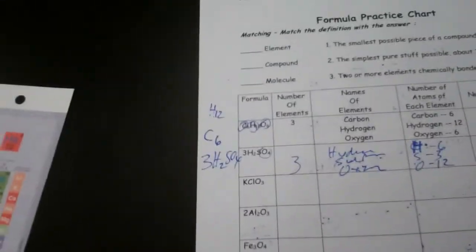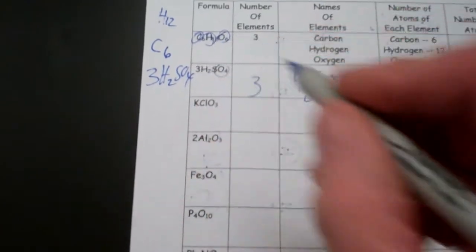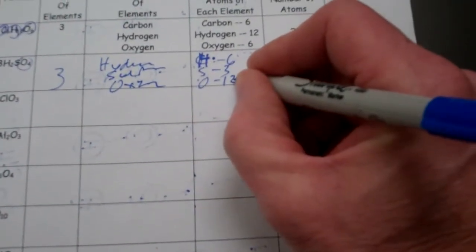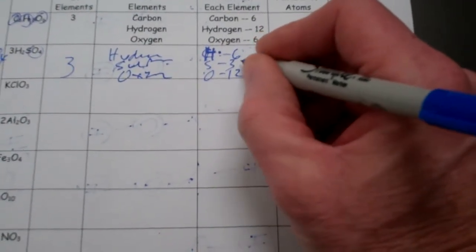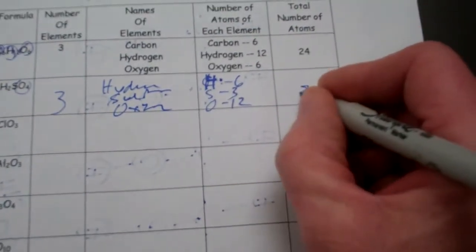Total number of atoms represented by this chemical formula. Well, let's see, that'd be 12 and 6 is 18, 19, 20, 21. So it'd be 21.